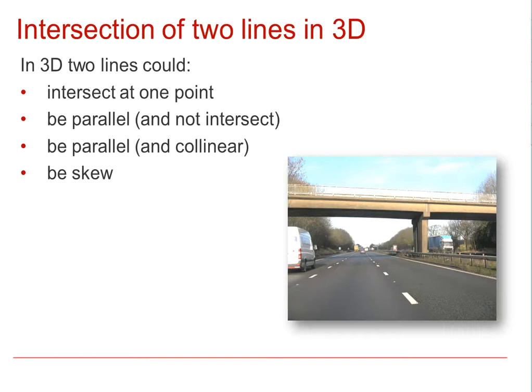If we have a look at the photograph, we can see that the bridge strut and the bridge horizontal are lines that intersect, that the road markings on this motorway are parallel lines, and that the road and the bridge are skew.